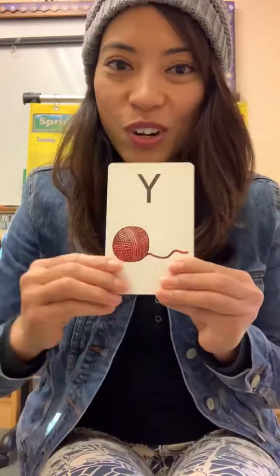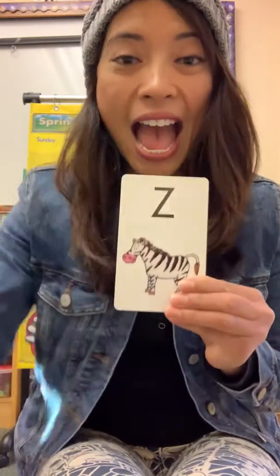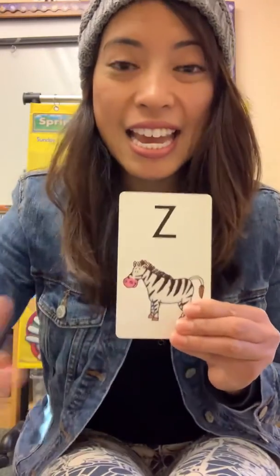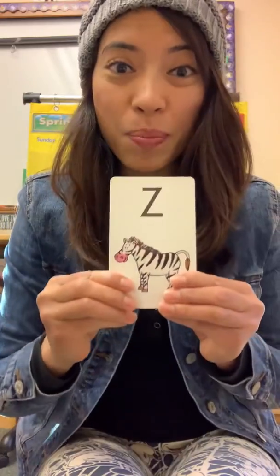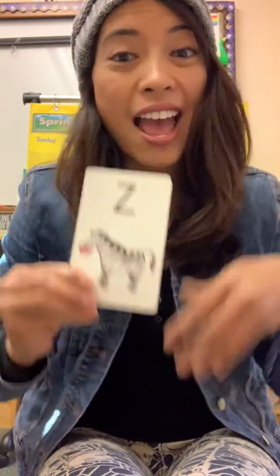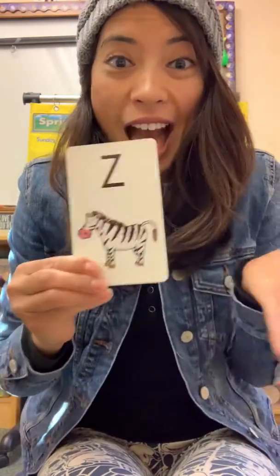Y is for yarn. And Z is for zebra. And we sang all the alphabet. Good job! I hope you enjoyed that song. I will see you again soon. Bye!